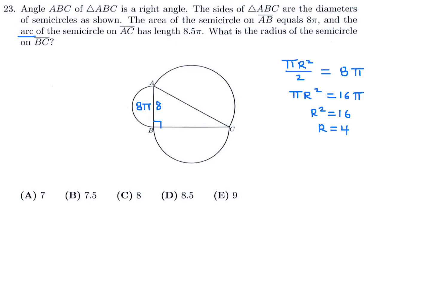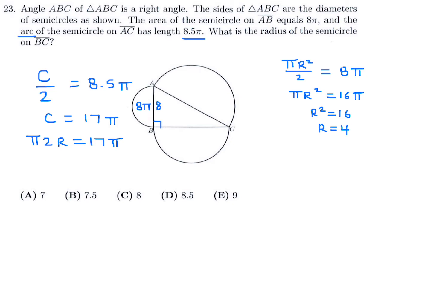The arc of the semicircle on AC has a length of 8.5π. That arc represents half the circumference, so circumference divided by 2 equals 8.5π, meaning the full circumference is 17π. Since circumference equals 2πr, we get 2r = 17, so AC equals 17.